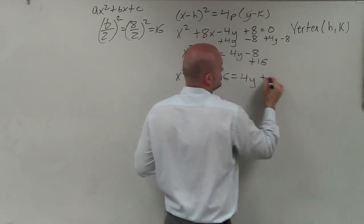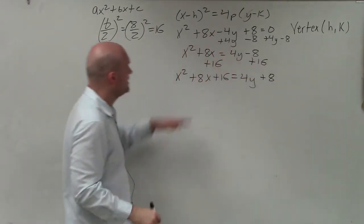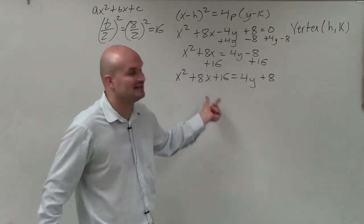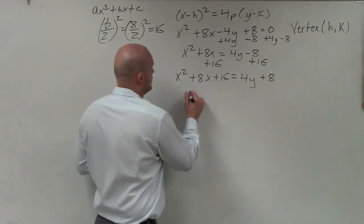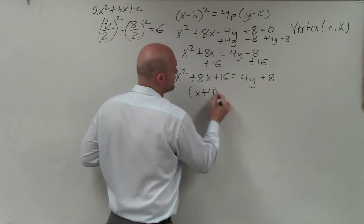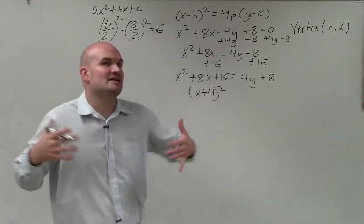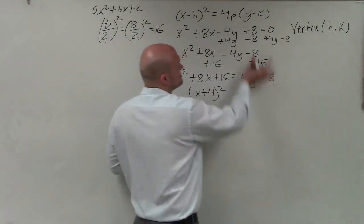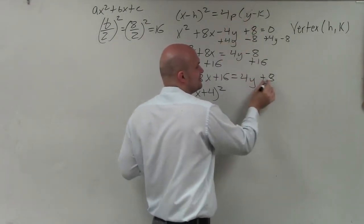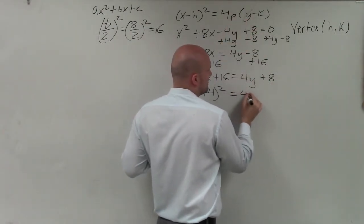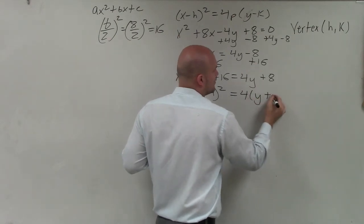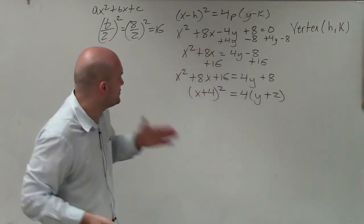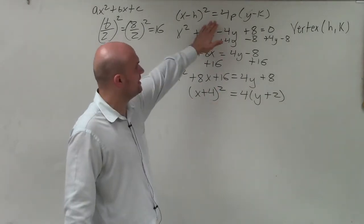Negative 8 plus 16 gives a positive 8 on the right side. This left side is now a perfect square trinomial, so I can rewrite it as the binomial squared: x plus 4, squared. Then to match the standard form, I factor out the 4 on the right side, leaving y plus 2. Now the equation is written in the standard form x minus h squared equals 4p times y minus k.